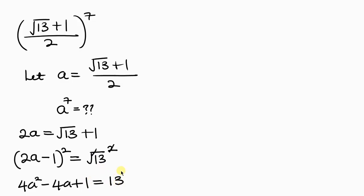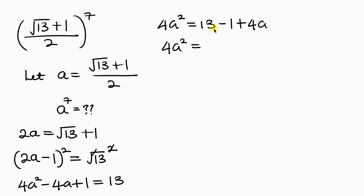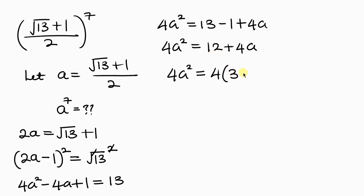Next, we move 1 and negative 4a to the right-hand side. So we have 4a squared equal to 13 minus 1, which is 12, plus 4a. Factoring out 4 on the right, we get 4a squared equal to 4 times (3 plus a). Cancelling the 4 from both sides gives us a squared equal to 3 plus a. We'll star this as it will be important.